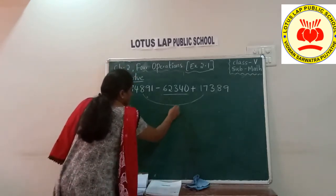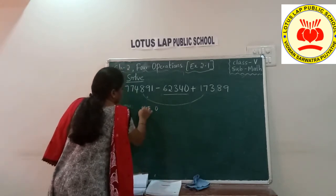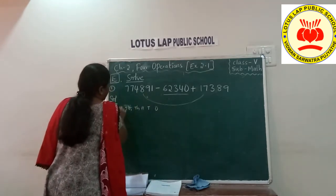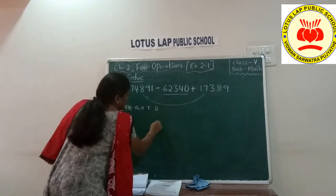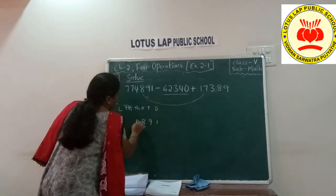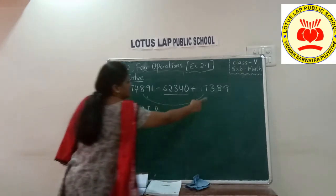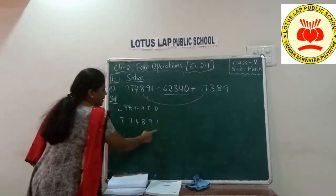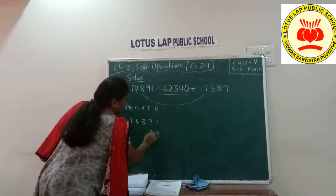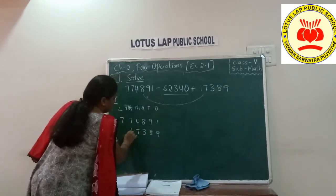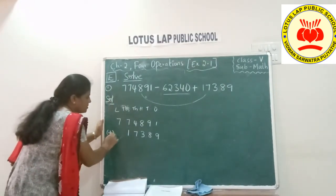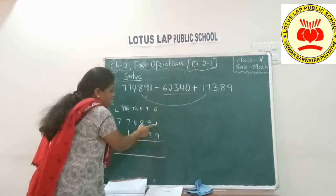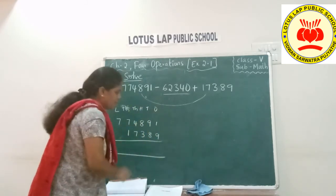Now let me do the addition first. Ones, tens, hundreds, thousands, ten thousands, and then lakhs. Let me write the first number: 7, 7, 4, 8, 9, 1. As I said, the third number has to be added because it has a plus sign. Let me write the third number: 1, 7, 3, 8, 9. Now let us put a plus sign because we are adding these two numbers. Starting from the ones place: one plus nine equals ten. Write zero in this place, carry one to the next tens place.